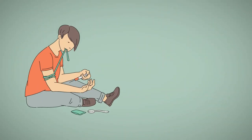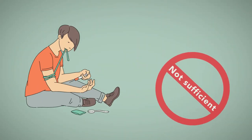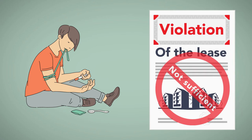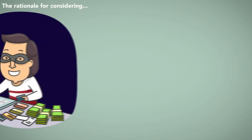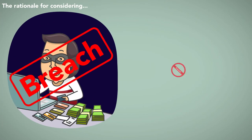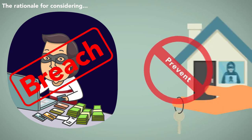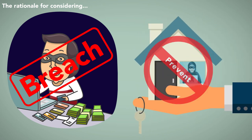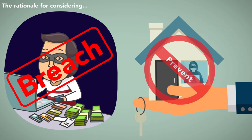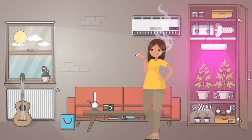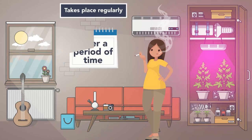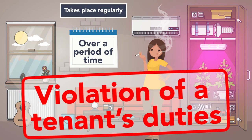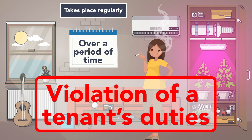Note, however, that isolated instances of illegal acts may not be sufficient to be considered a violation of the lease. The rationale for considering illegal behavior to be a breach is to prevent rental properties from being used for illegal purposes. As such, only conduct which takes place regularly over a period of time will be deemed a violation of a tenant's duties.